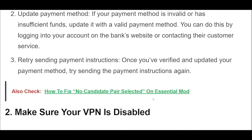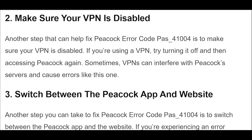Another step that can help fix Peacock Error Code PAH_41004 is to make sure your VPN is disabled. If you're using a VPN, try turning it off and then accessing Peacock again. Sometimes, VPNs can interfere with Peacock servers and cause errors like this one.